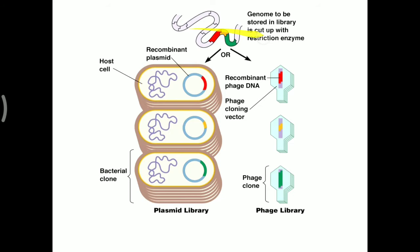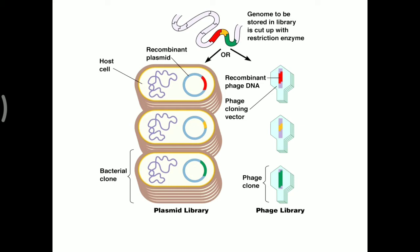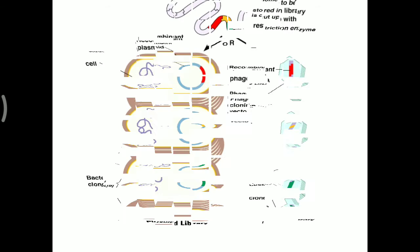For a gene library: a chromosome is cut with a particular restriction endonuclease enzyme into parts — shown as different colors. Each part is inserted into a different plasmid, and each plasmid is grown in a colony so multiple copies are available. This creates a plasmid library. If inserted into phages instead, it creates a phage library. Ready-made availability of the desired gene is thus provided in either library.